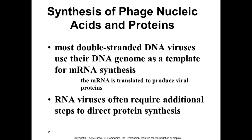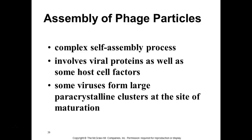Most double-stranded DNA viruses use their DNA as the template for messenger RNA synthesis — this is what our cells normally do. Then that messenger RNA is turned into viral proteins. RNA viruses may require additional steps depending on whether positive or negative strand. Some go RNA → DNA → RNA, and others just copy their own RNA and make messenger RNA from it.